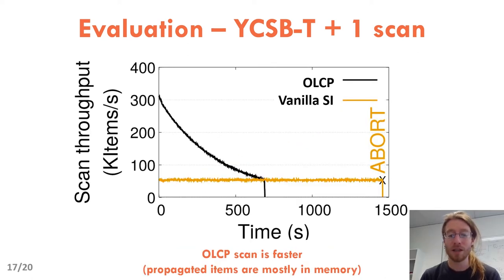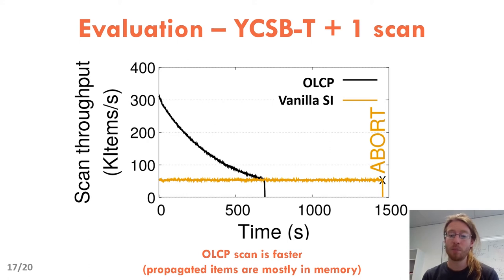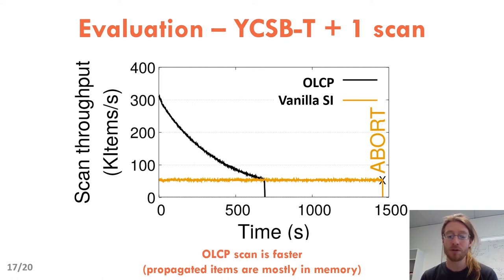The second result is the speed of scans. Surprisingly, scans are much faster using OLCP than using standard snapshot isolation. With standard snapshot isolation, the scan has a roughly constant throughput over time because it reads most of its data from disk. With OLCP, data is propagated, and propagated items are usually read from memory, so the scan is much faster than if it had read data from disk. The effect is particularly visible at the beginning of the scan, because most propagations are useful and result in reads from memory. As the scan progresses, it is less and less likely that propagations will be useful, and so the throughput at the end reaches the same level as with snapshot isolation.